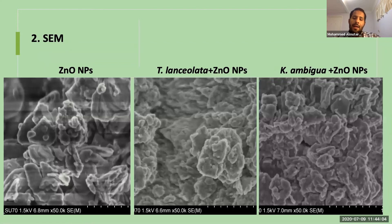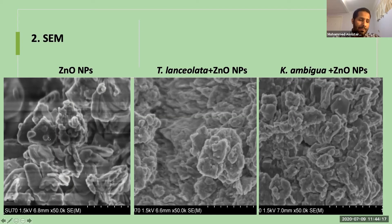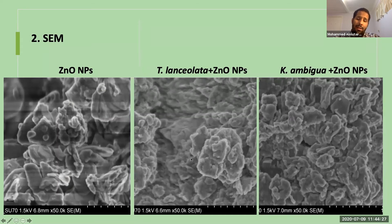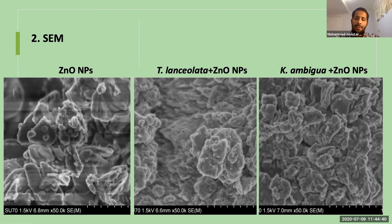The scanning electron microscopy shows that the control zinc oxide nanoparticles were flat in shape — this image represents the best example of the flat shape — and the average size was 220 nanometers. While Kunzea ambigua and Tasmannia lanceolata nanoparticles were multi-form in shape, and the average size was 120 to 170 nanometers.